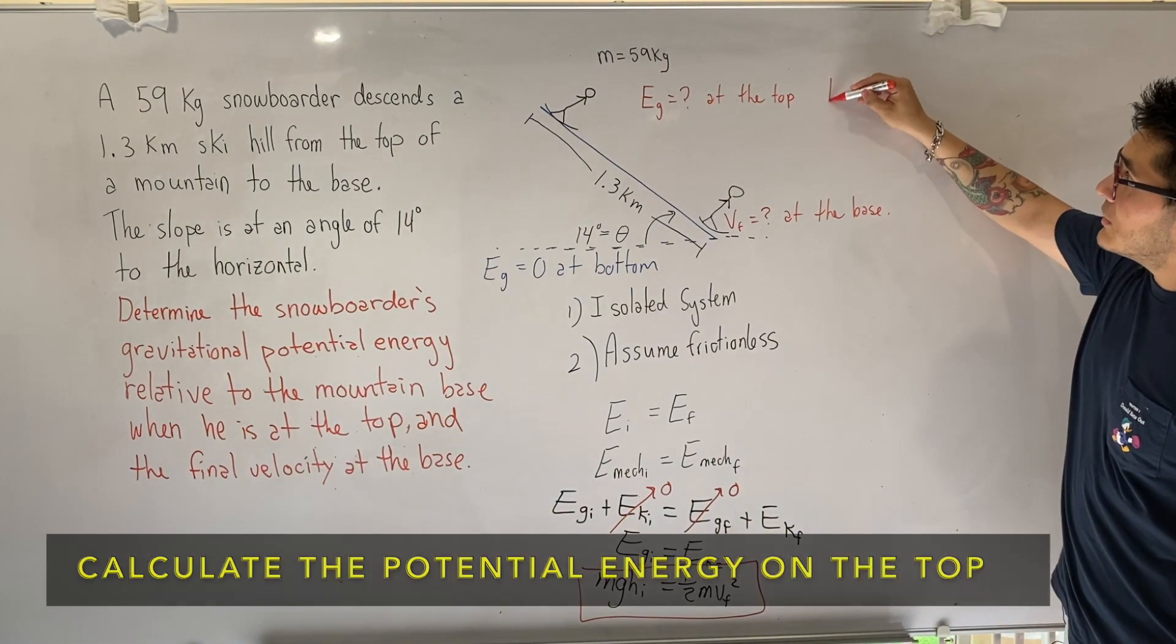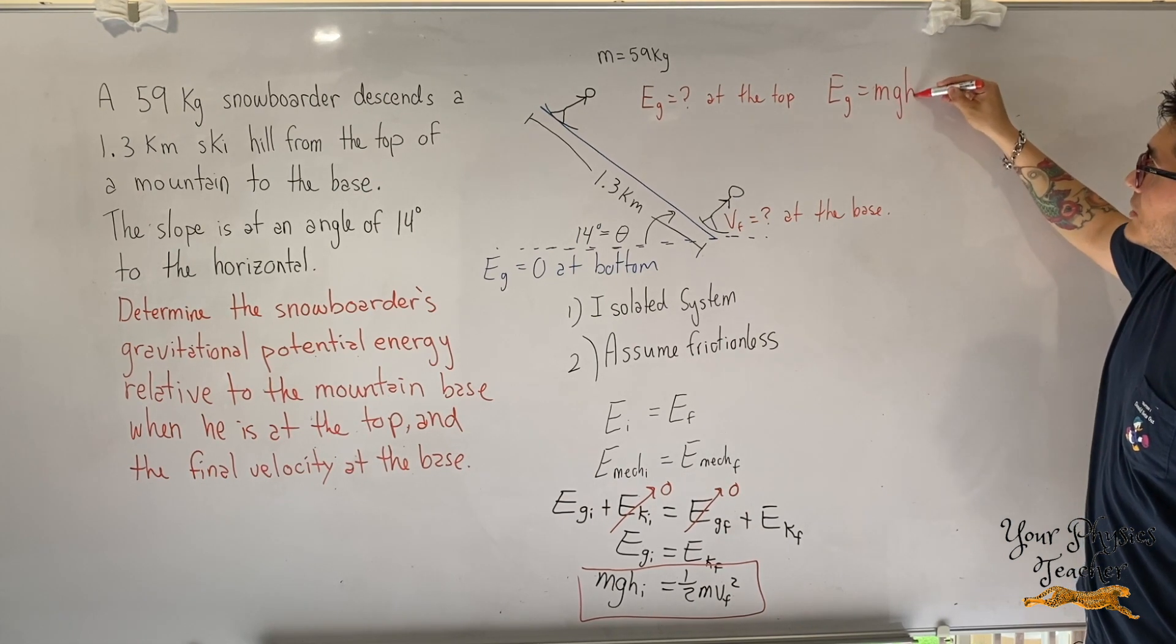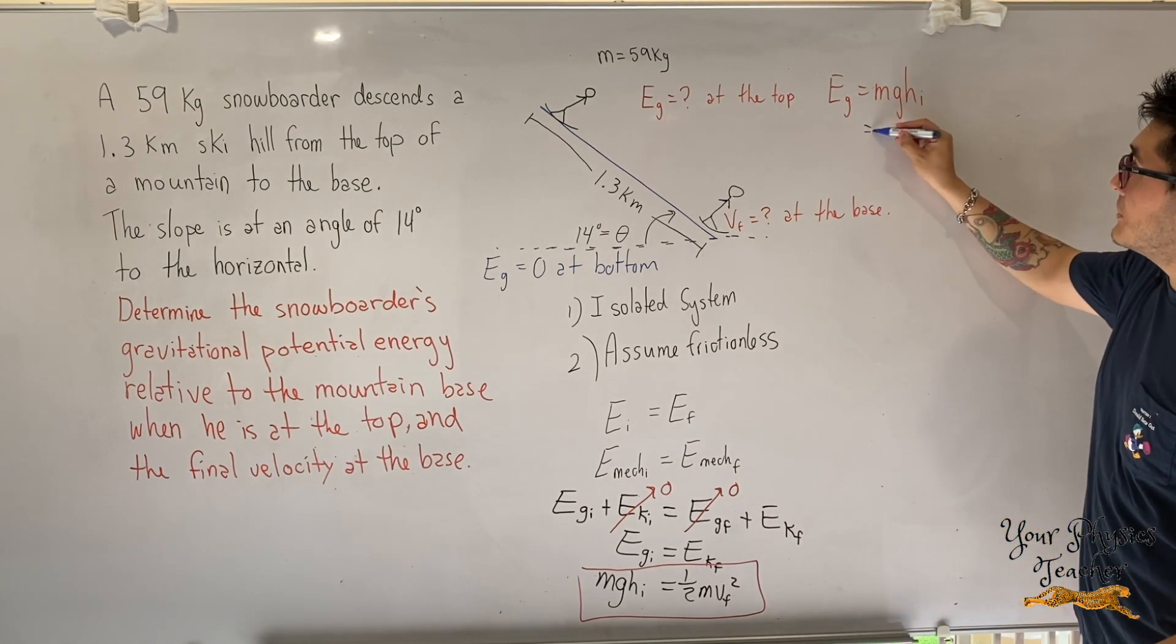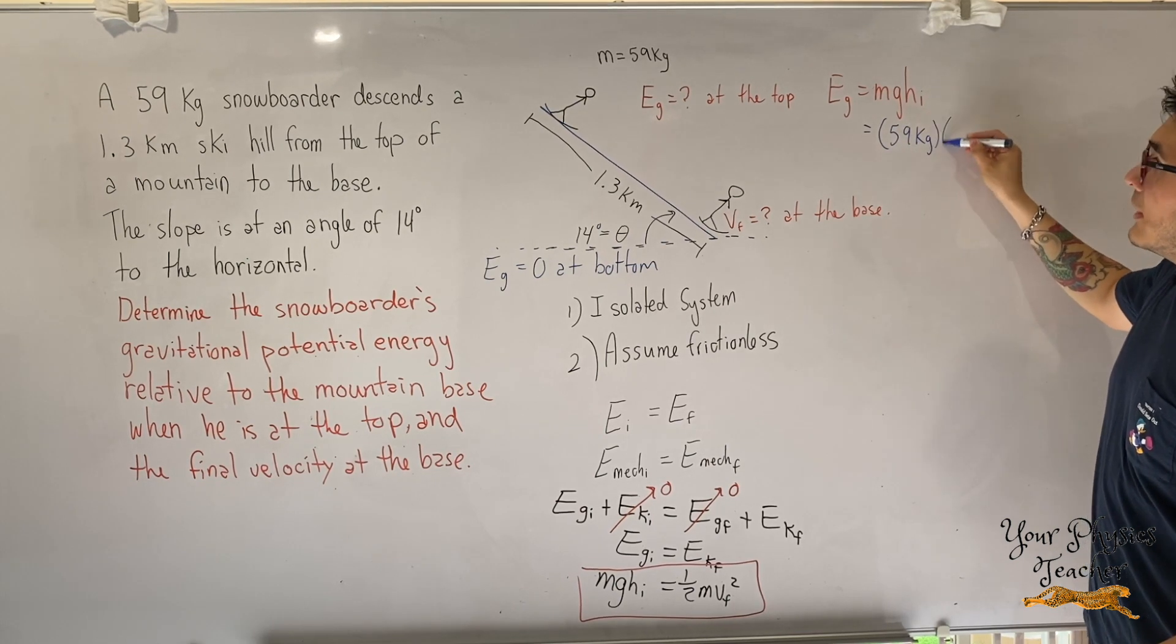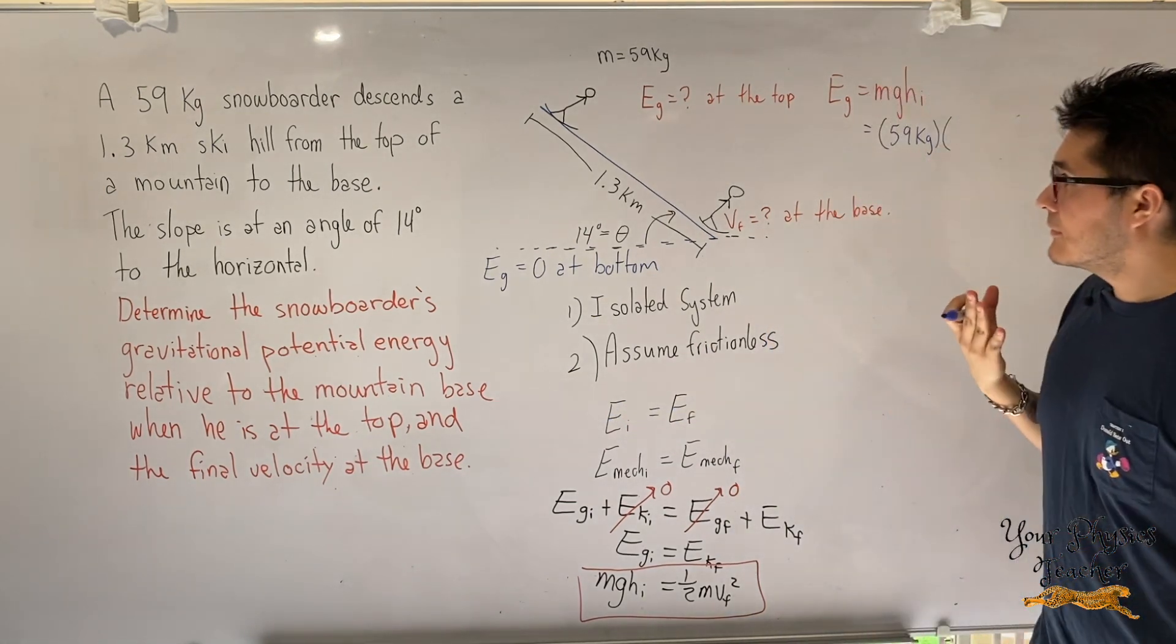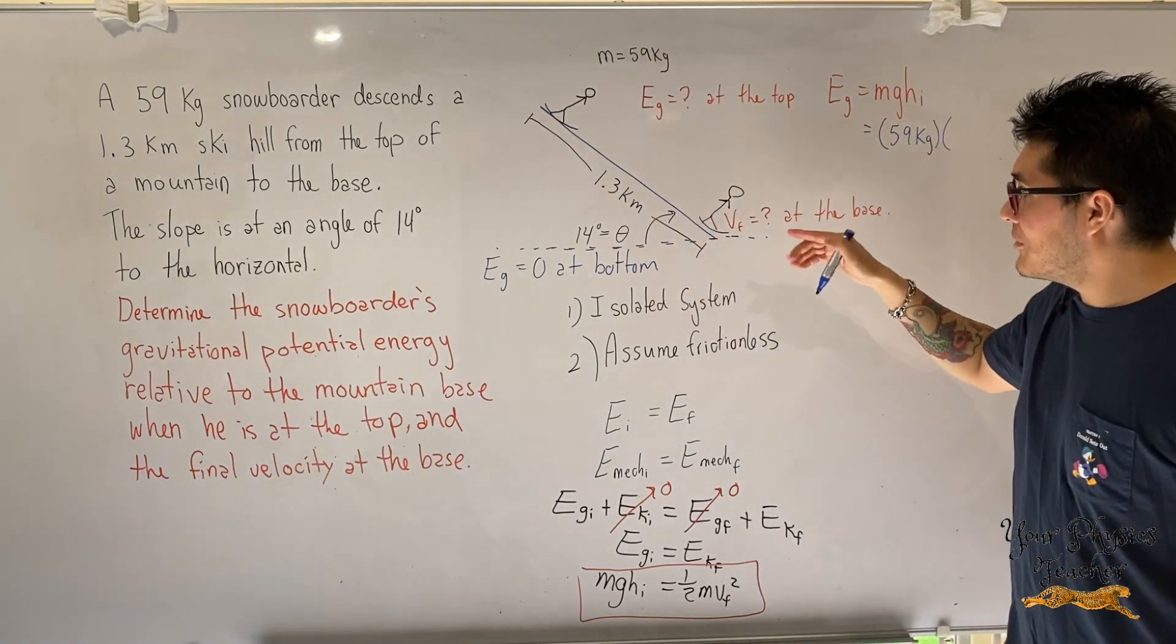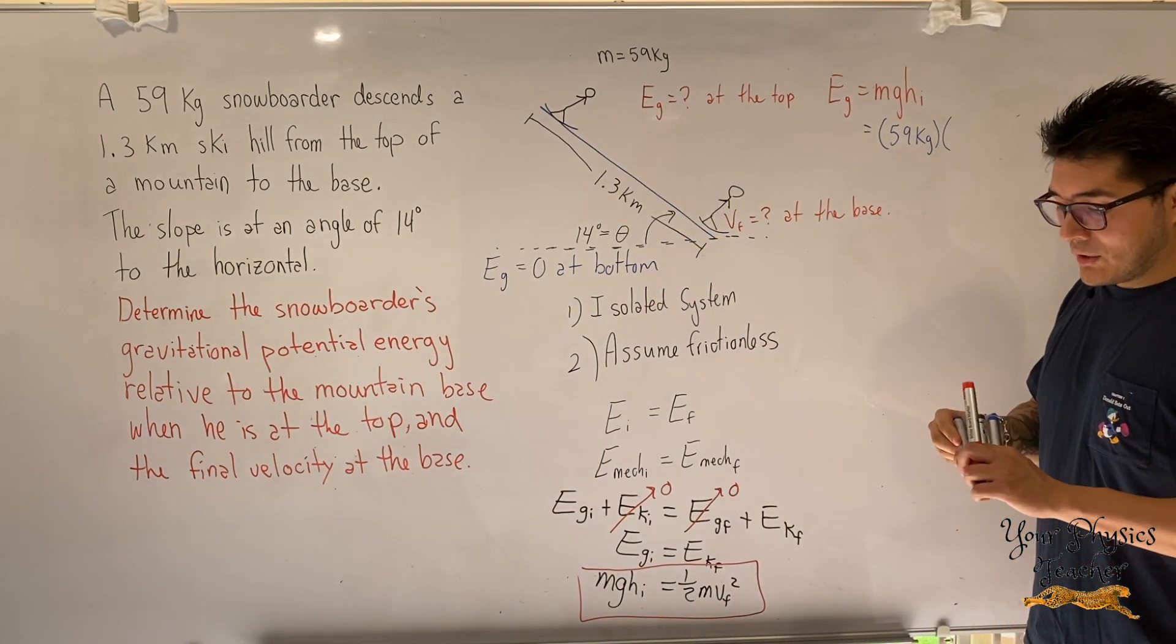So the formula, as we already said, is just going to be mgh initial. The mass we're given. The mass is 59 kilograms. And the height. Oh, we're not given the height. That's probably why we need to solve for this question, right? The only thing that we were given is the slope of the ski hill and the angle of inclination. It turns out we can use some trigonometry.